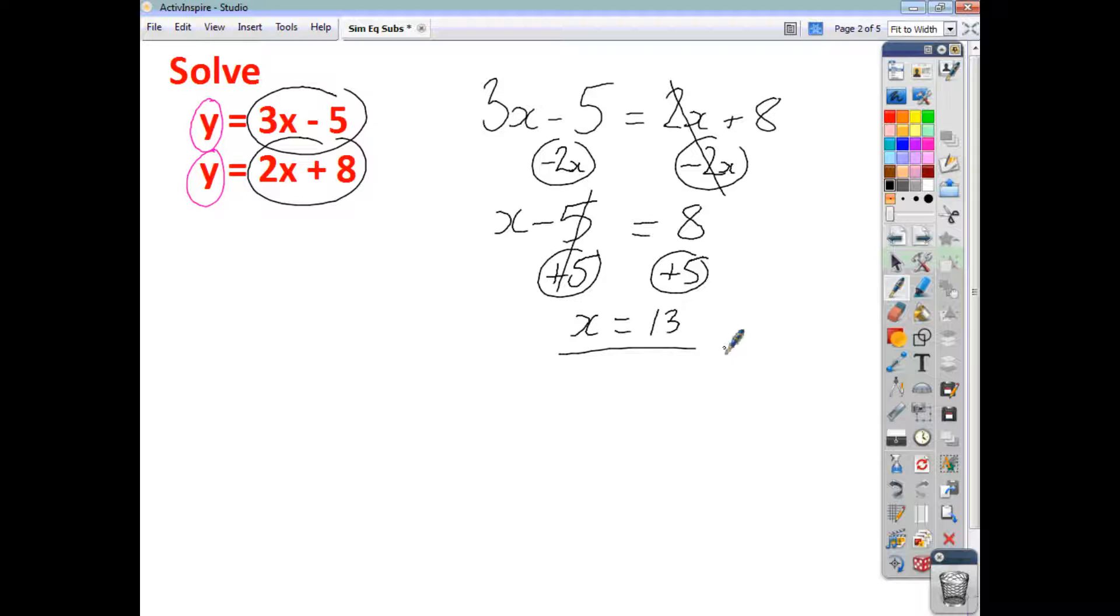Now, once you know what x is, then all you do is you take that fact and sub it into either one of these two equations. So it doesn't really matter which one we go for. If I just go for the second one, we'll say y is equal to 2x plus 8. And that's just going to be two lots of 13 plus 8, so it's 26 plus 8, which gives us an answer of 34.